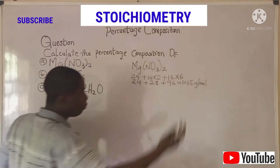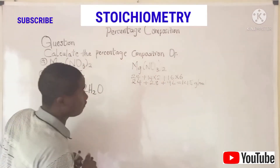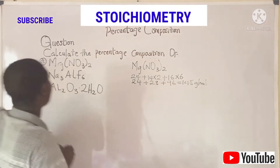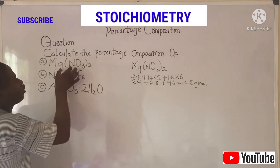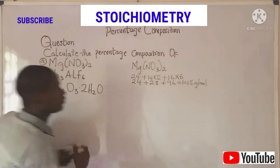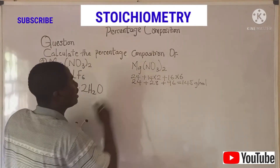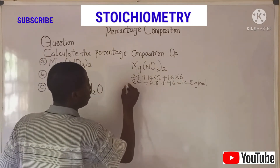Basically, we have 24 plus 28 plus 96, giving us 148 grams per mole. This is the overall molar mass — the formula weight — of the compound. To calculate the percentage composition of each element that makes up this compound is very easy. Let's solve for the first, which is magnesium.